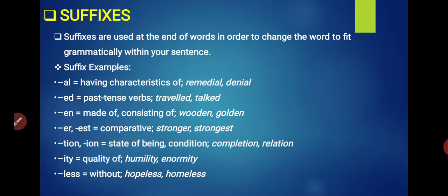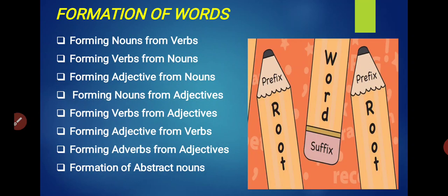So beta, this way words are formed with the help of suffixes and prefixes. It is very easy. We are making verbs from nouns, nouns from verbs, adjectives from nouns, nouns from adjectives. So all these parts of speech changes are very easy with the help of suffixes and prefixes. Like formation of nouns from verbs, forming verbs from nouns, forming adjectives from nouns, forming nouns from adjectives, forming verbs from adjectives, forming adjectives from verbs, forming adverbs from adjectives, and formation of abstract nouns. Everything we can do with the help of prefixes and suffixes.